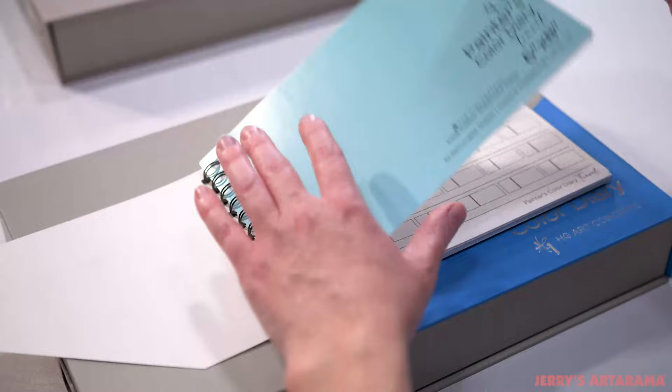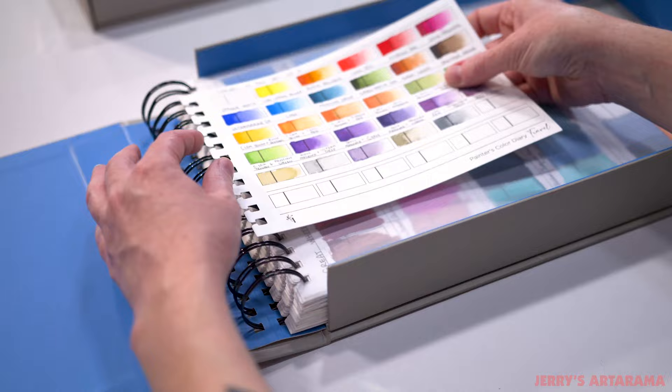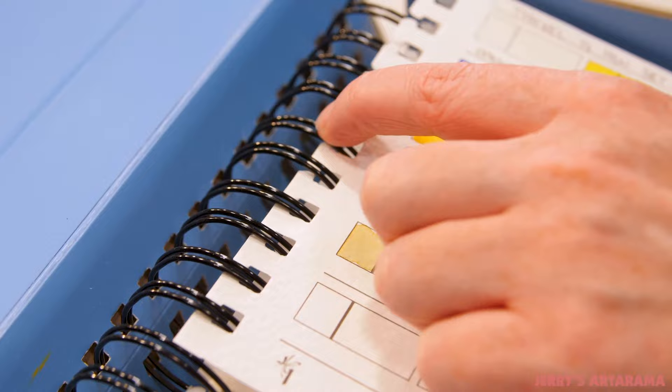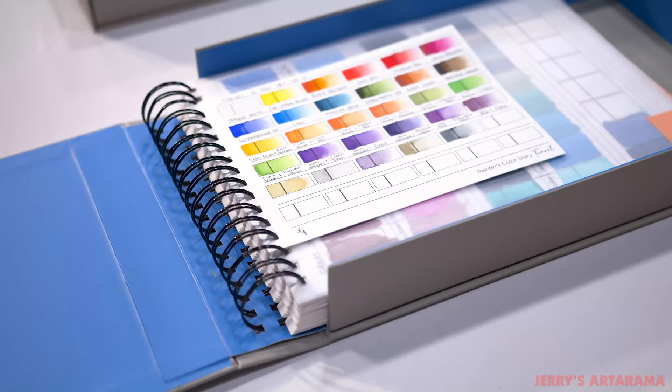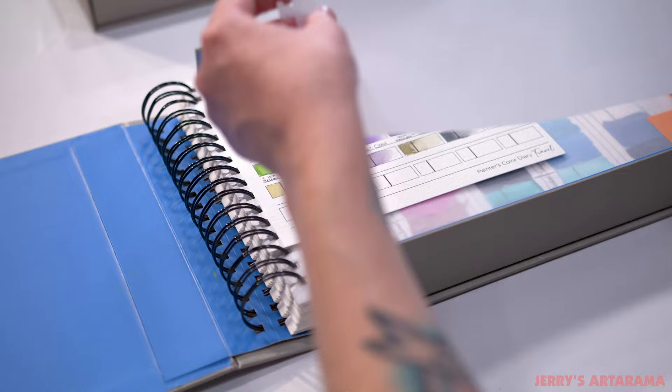When you go to put in a sheet all you have to do is line it up wherever you want it to be and then pop in the little tabs. Then take a glycine sheet because the ones in the diary are not removable and pop that right on top, and now it's nice and protected.